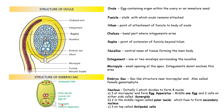Then there are two nuclei which are in the middle region and they are called the polar nuclei. These polar nuclei fuse and form the secondary nucleus. And then we have three more left — these three nuclei are found in the top portion and they are known as the antipodals, the antipodal nuclei. So now the structure of ovule is clear.